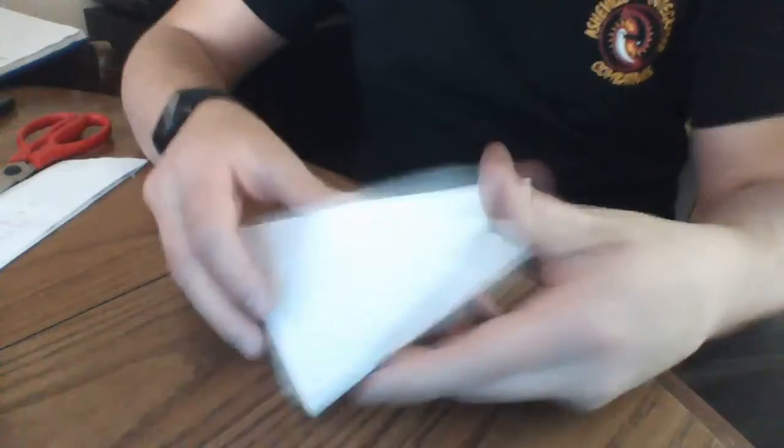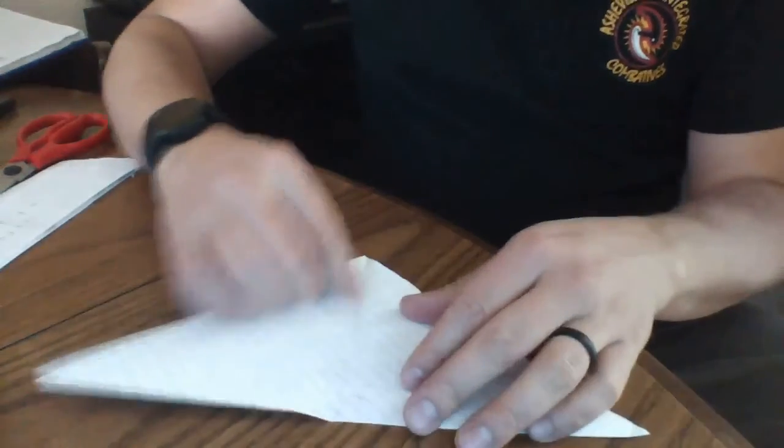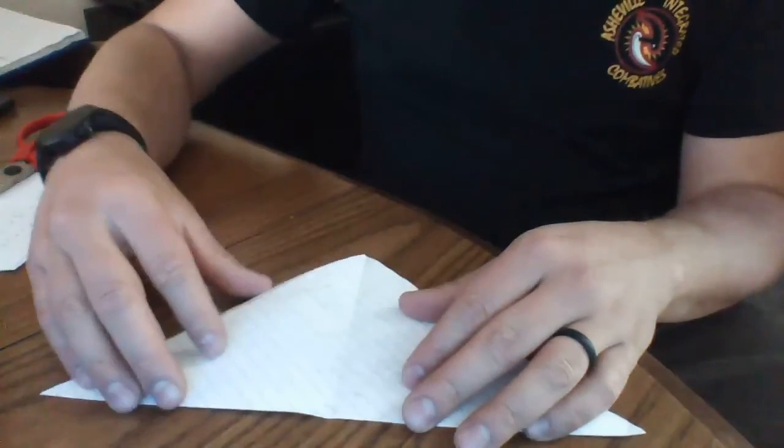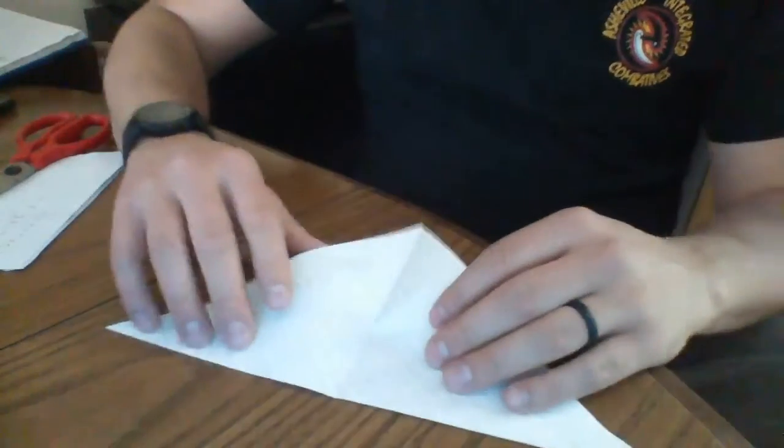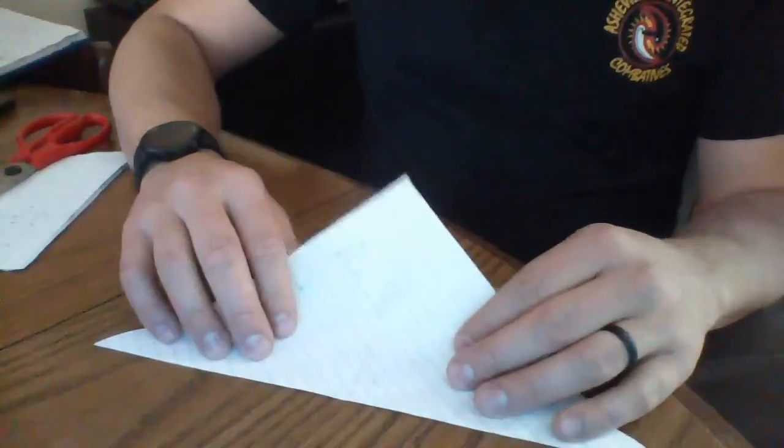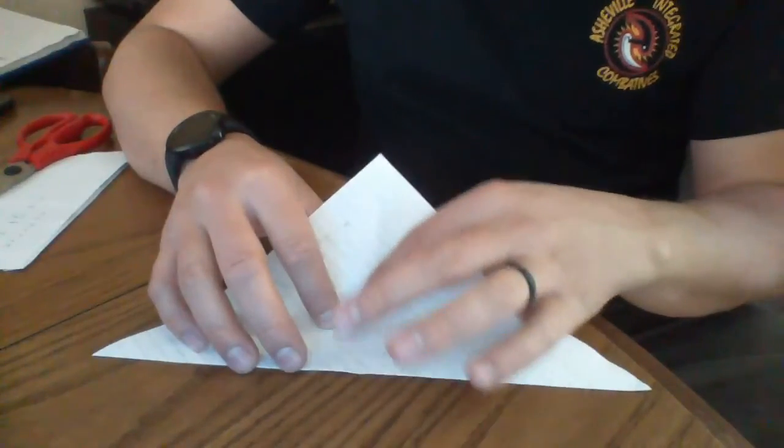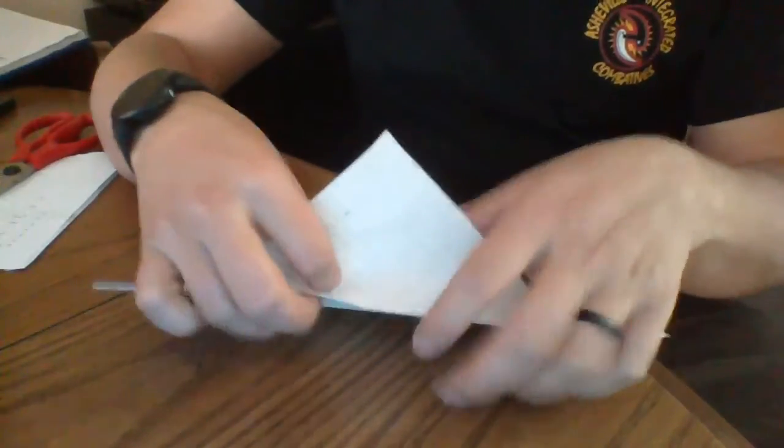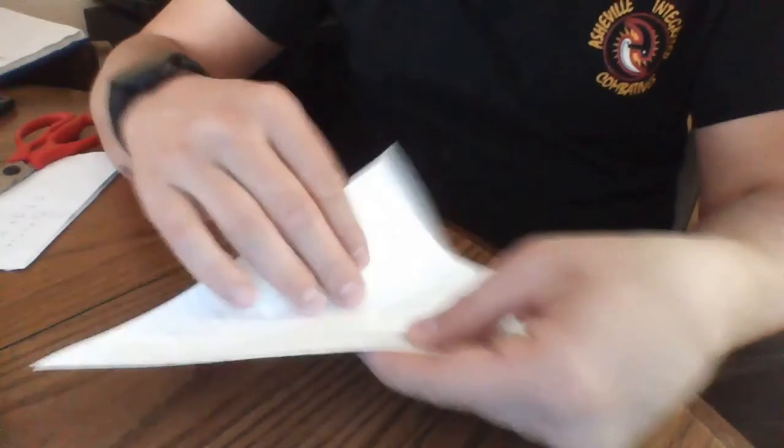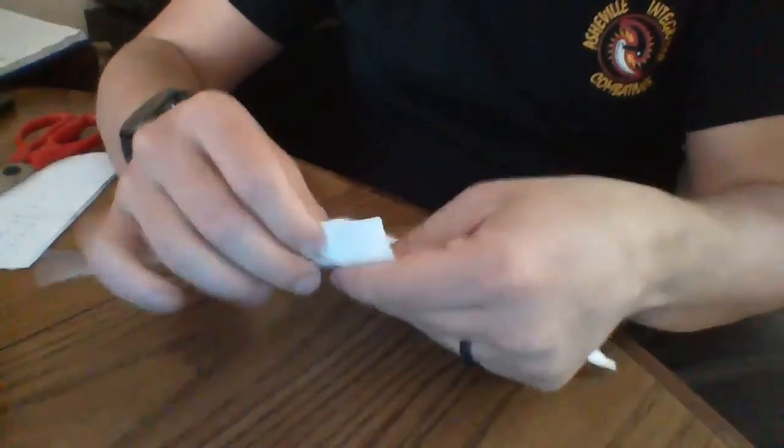Now that gives us a nice center line to work off of, which makes it a lot easier. So from here we're gonna take this end, we're gonna fold it up, and we want to make sure the center line is matching along this fold. Fold it up so there's maybe an inch, inch and a half poking out above. See that?